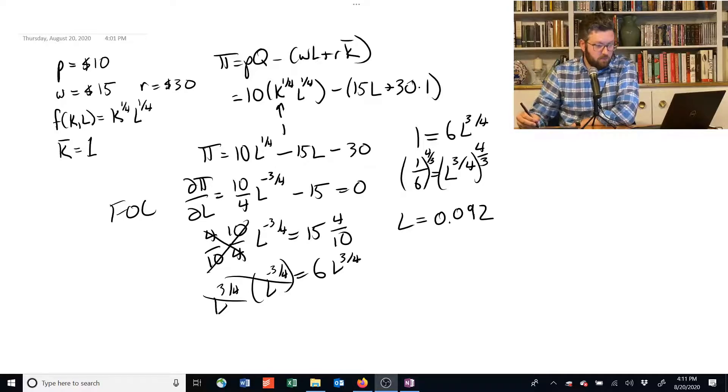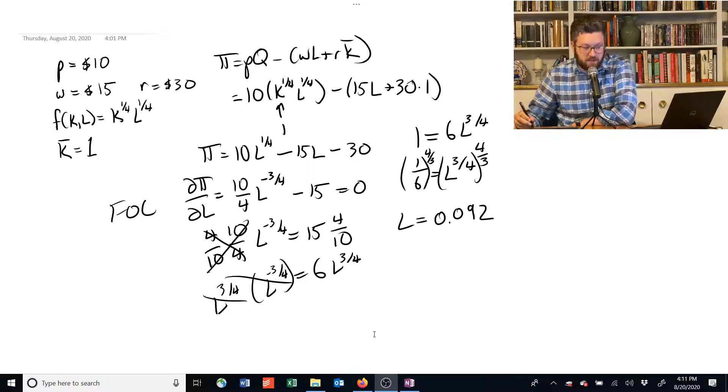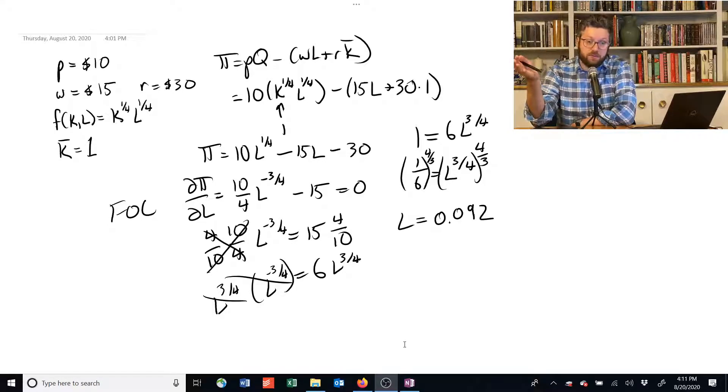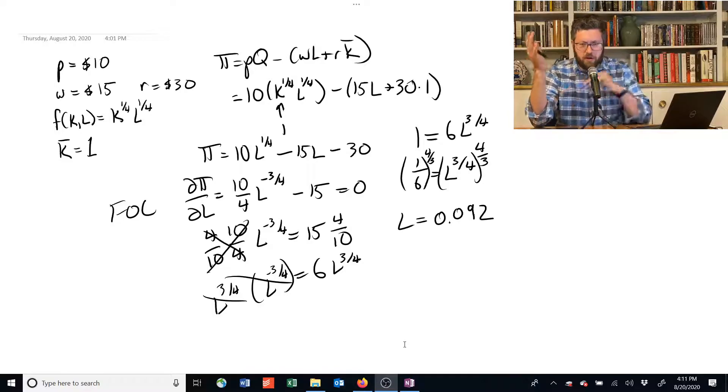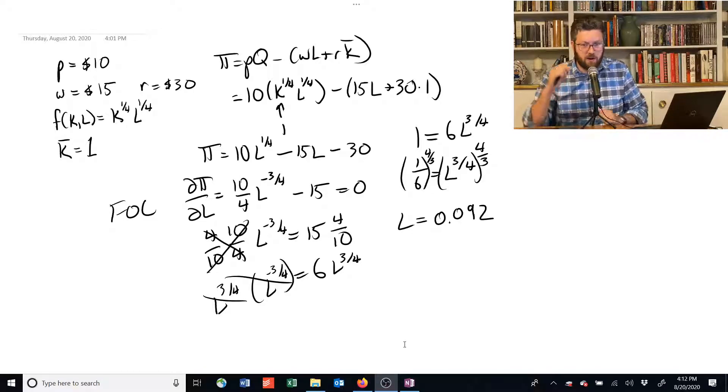All right? So that is the solution. That's the amount of labor they should hire. It's less than 1. We can imagine that this production function is measured in terms of hundreds of workers or hundreds of worker hours or something like that. And so getting some kind of weird number like this doesn't mean it's wrong.